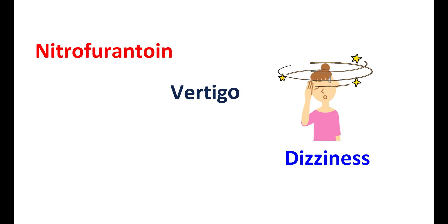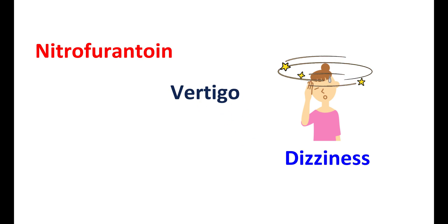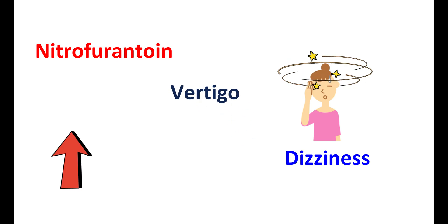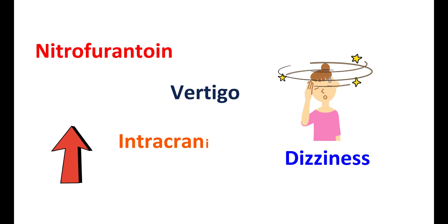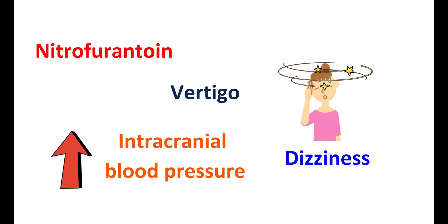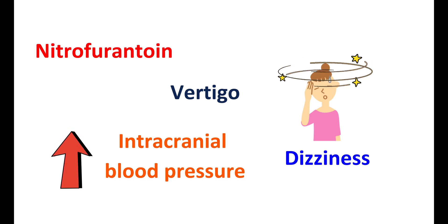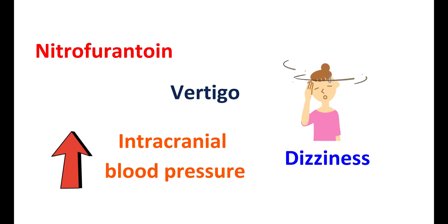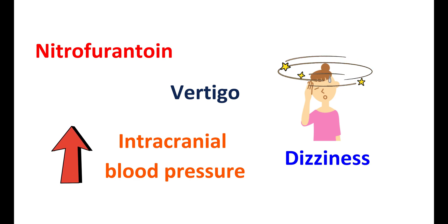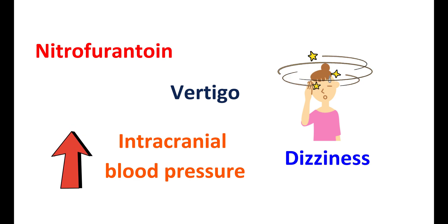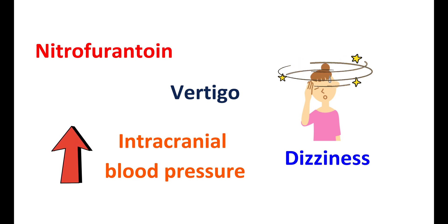Vertigo, dizziness, and drowsiness can also be observed. It can also increase the intracranial blood pressure, confusion, and a few psychotic reactions. On the skin, it can produce itching, skin rashes, and alopecia — loss of hair.